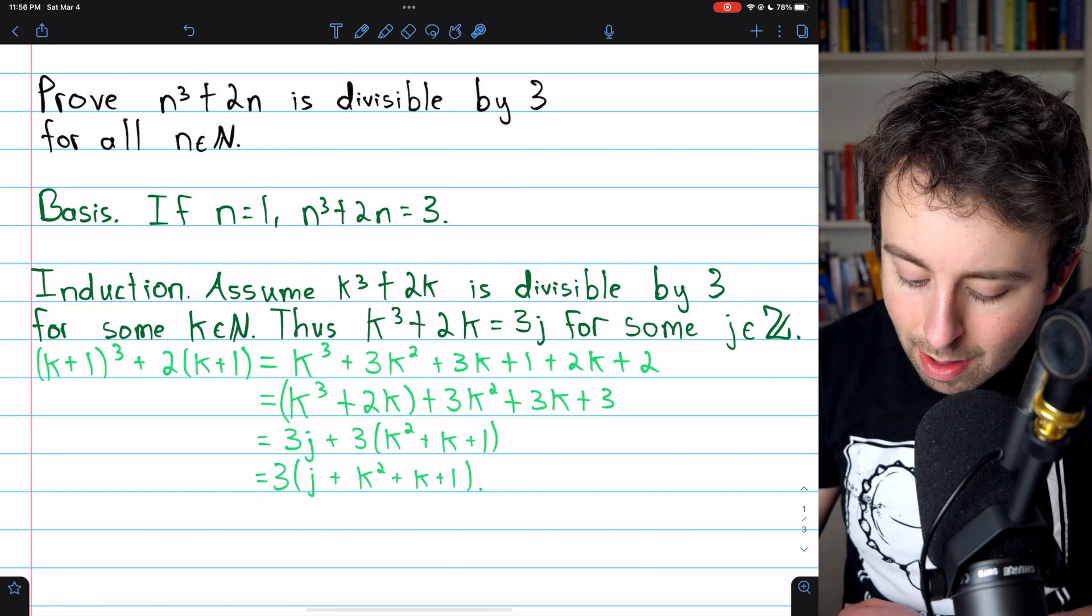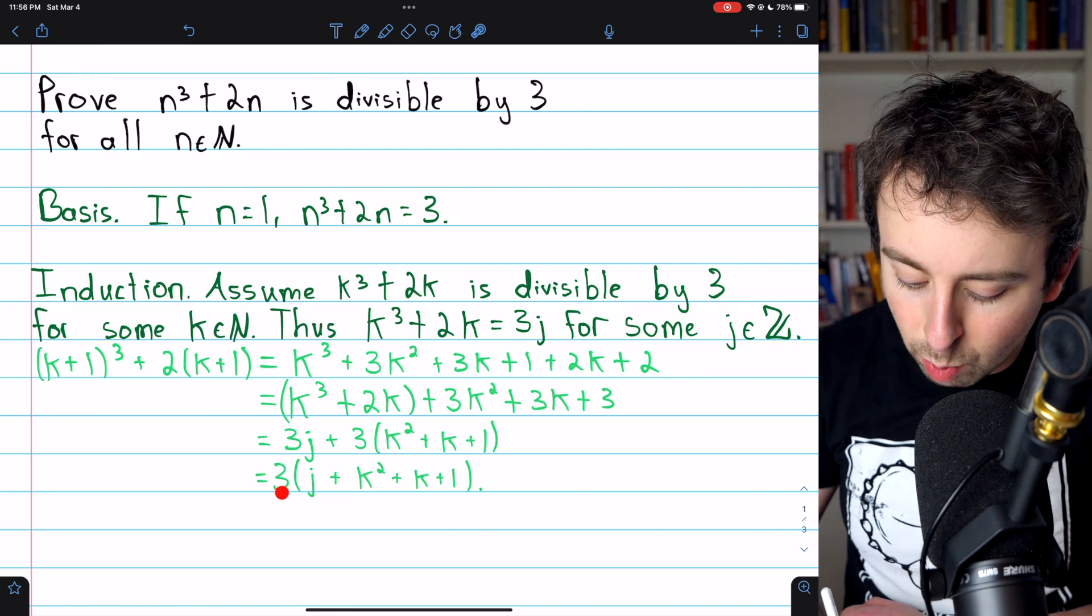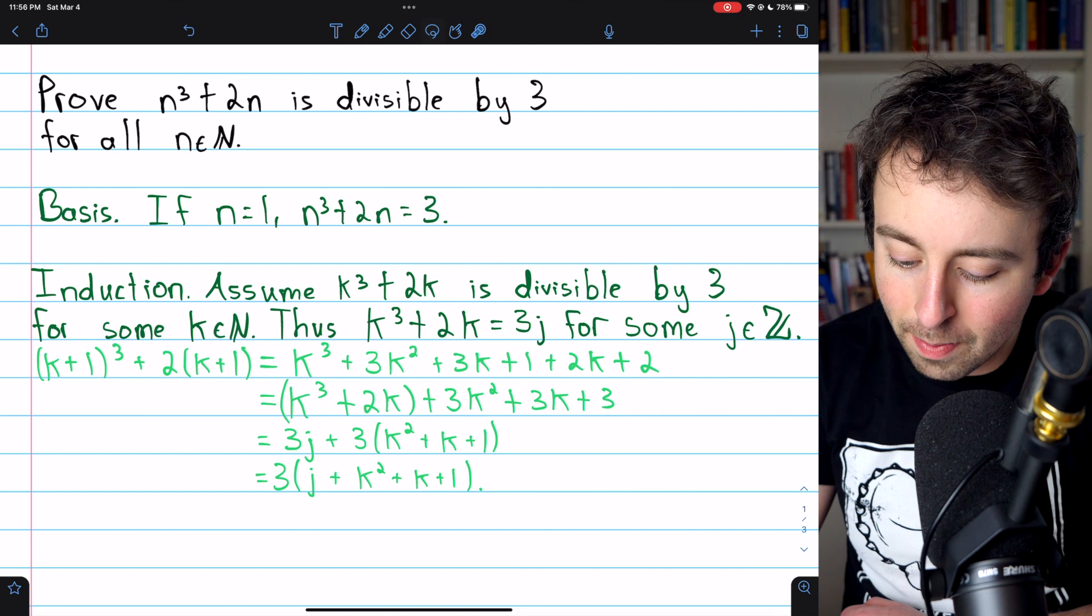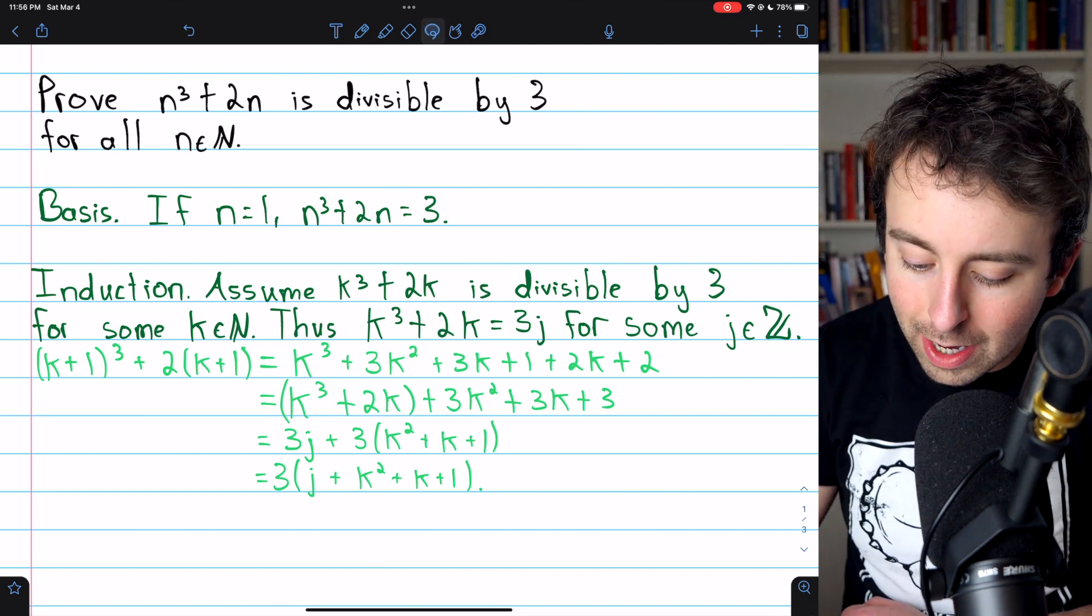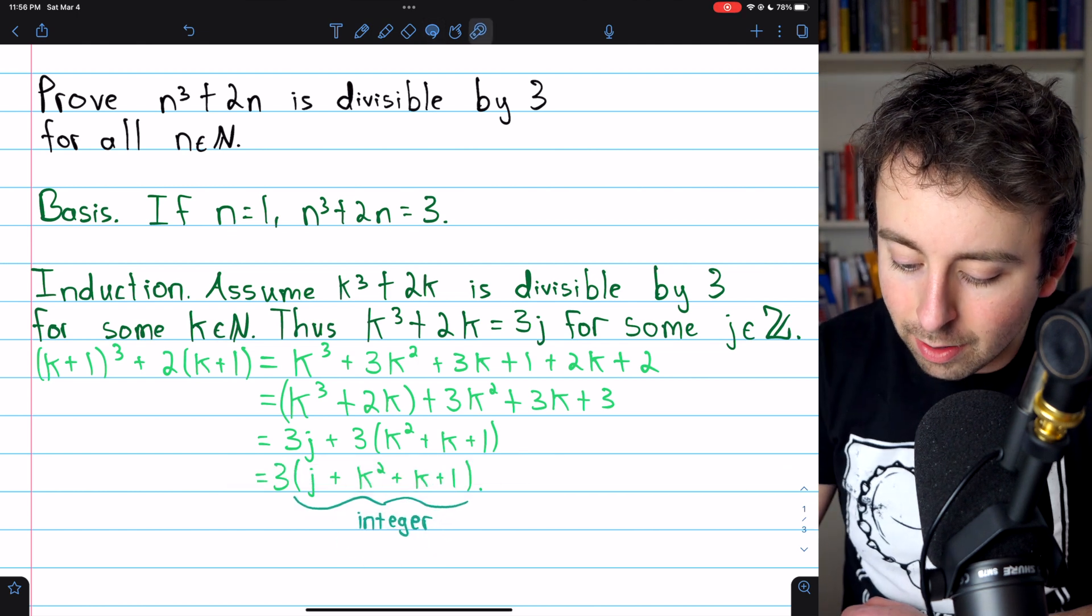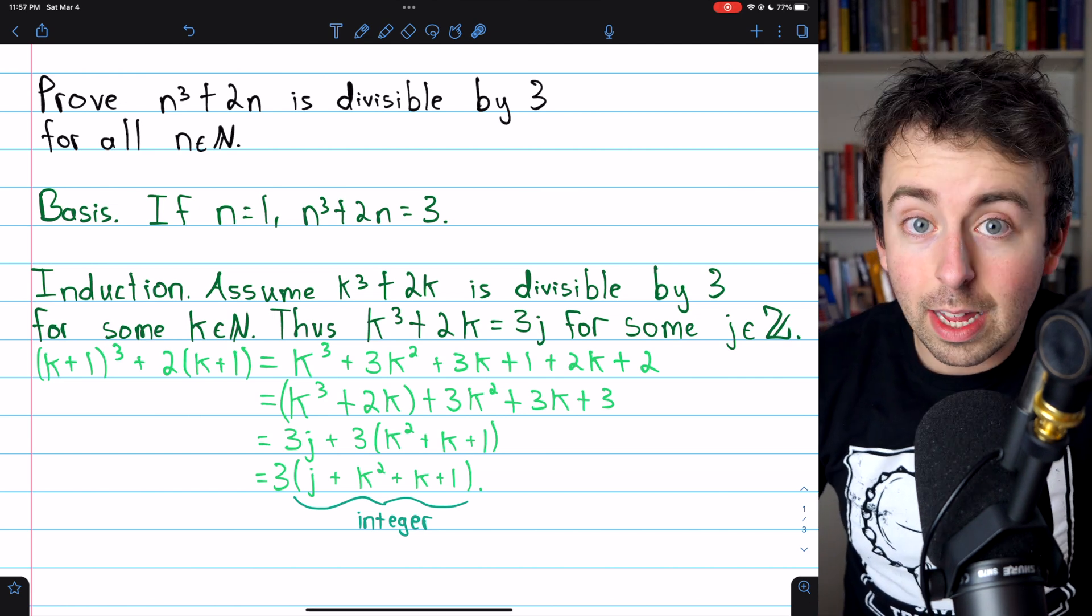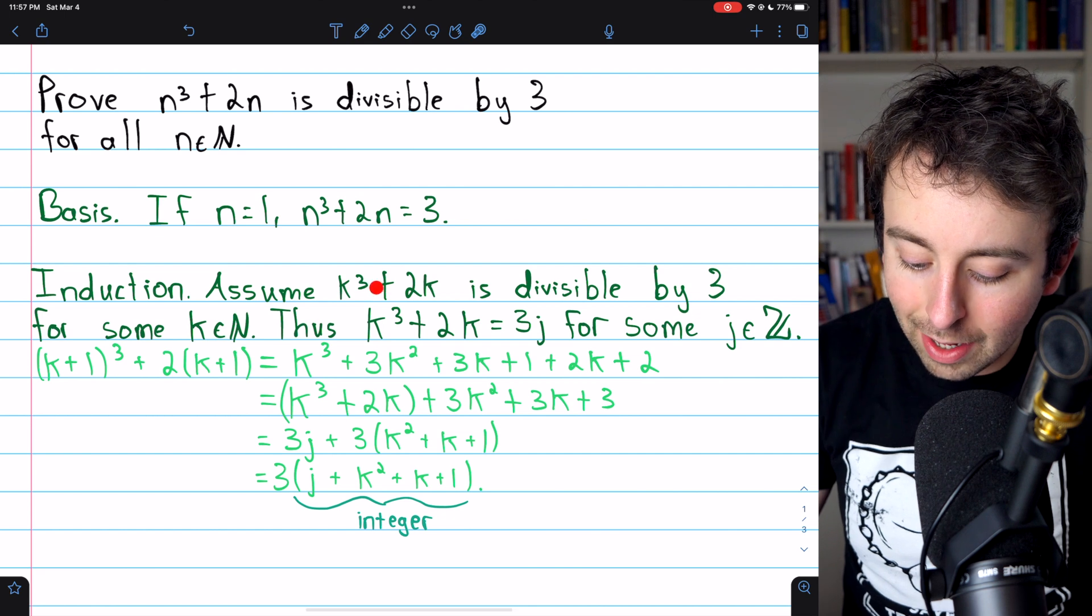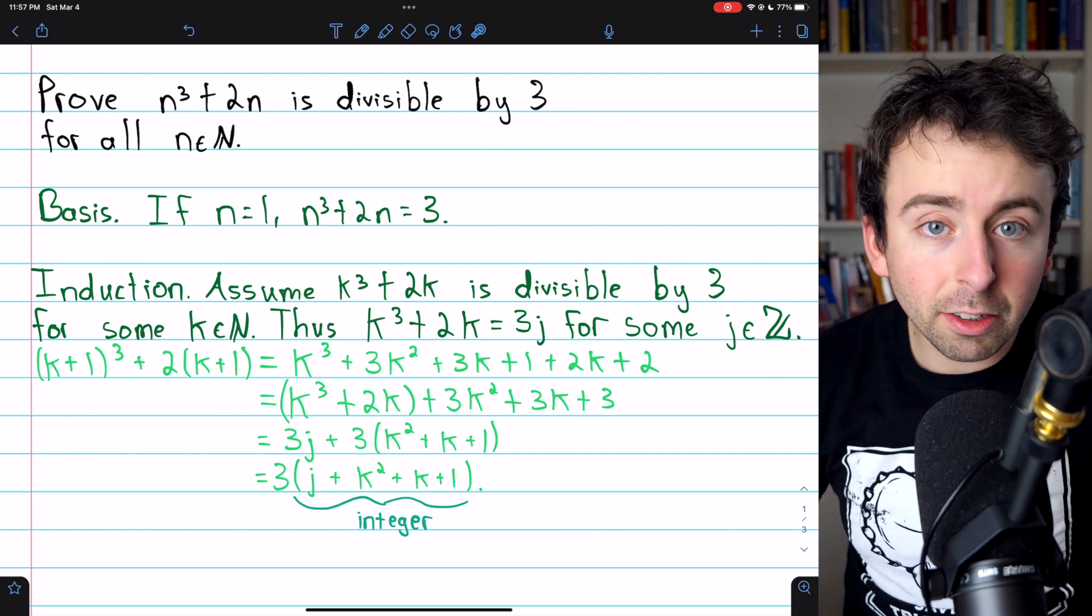Then we can pull a 3 out of both of these terms, leaving us finally with 3 times j plus k squared plus k plus 1. So what we have now is 3 times an integer. This sum in the parentheses has to be an integer because all of its pieces are integers. So we've shown that if for some positive integer k, its cube plus its double is divisible by 3, then the next positive integer, k plus 1, has a cube added to its double,